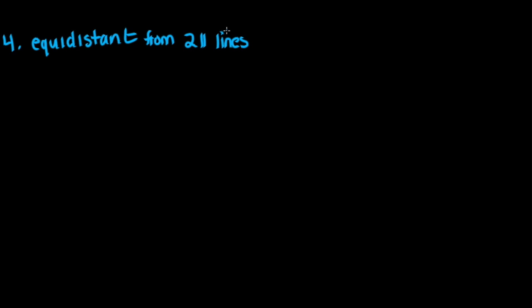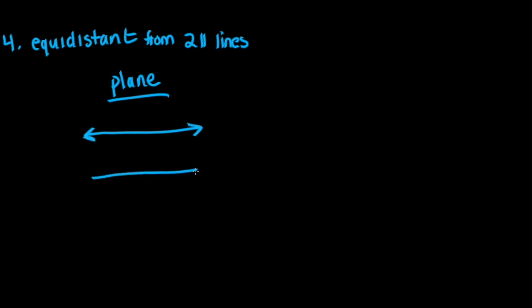The fourth of the famous five is equidistant from two parallel lines. In a plane, if we have two parallel lines, what would be the locus of points that is equidistant from these two lines? That would be a parallel line in the middle. The simplest way to describe it is just a parallel line in the middle.